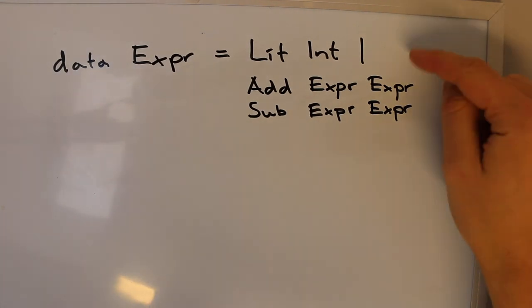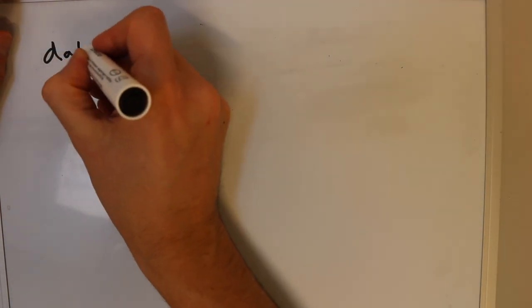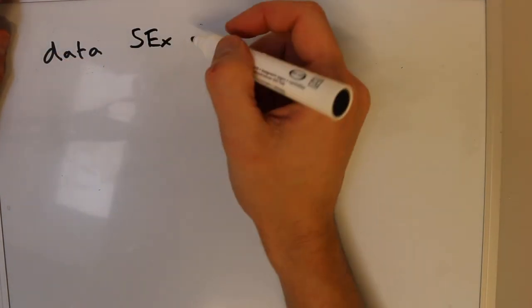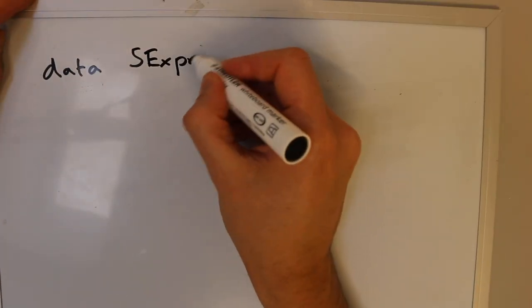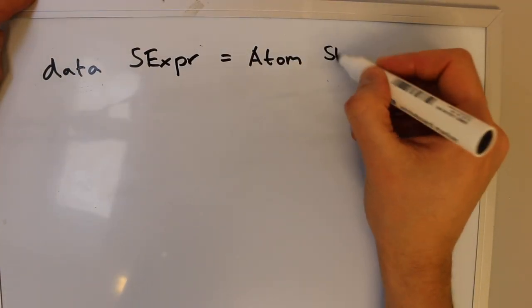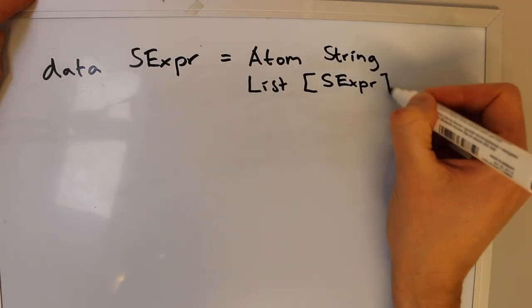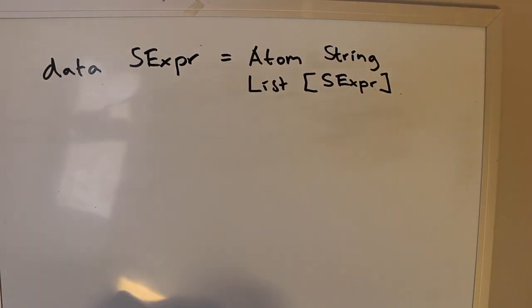For the Lit case there is no further recursion. As a final example of a recursive data type, an S-expression is either an atom or a list of S-expressions.